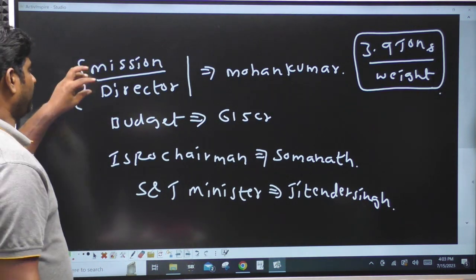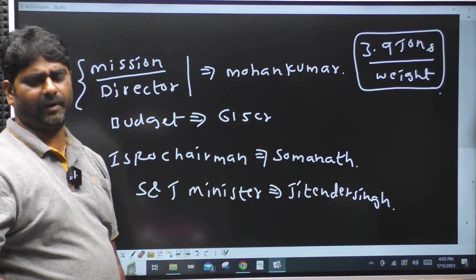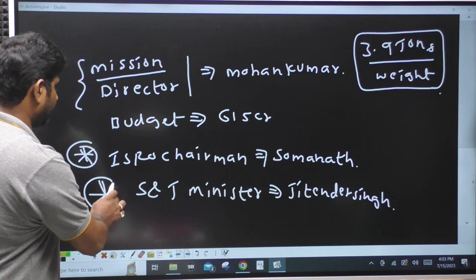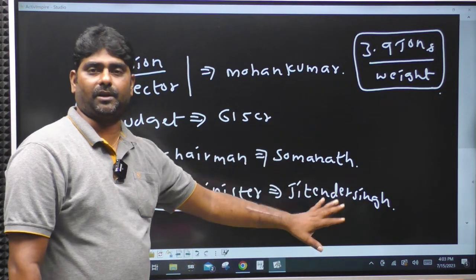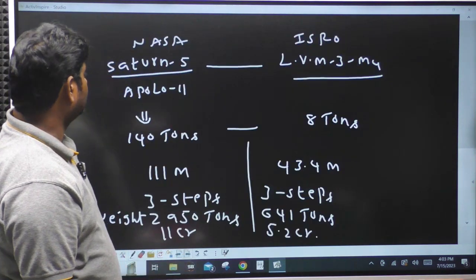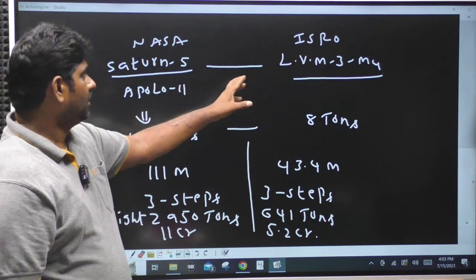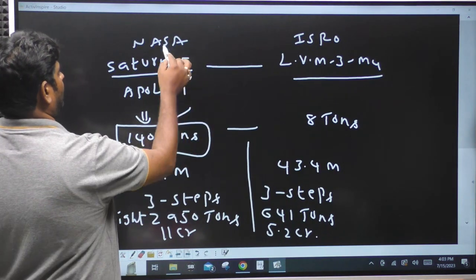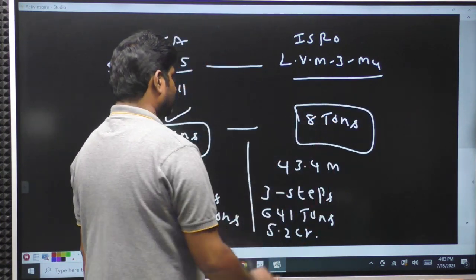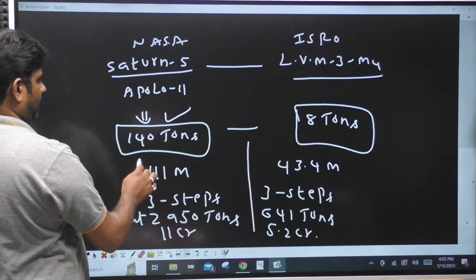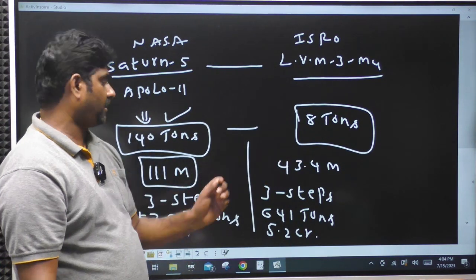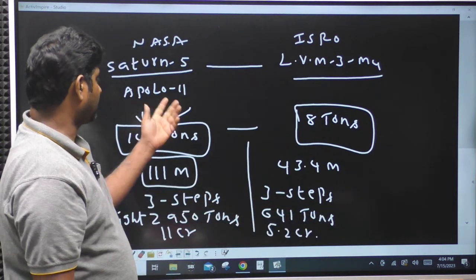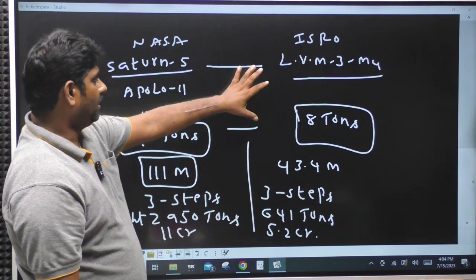The mission director is Mohan Kumar. The mission weight is 3.9 tons and the budget is 615 crores. ISRO chairman is Somanath, and the Science and Technology Minister is Jitendra Singh. India's LVM3-M4 is compared to America's Saturn 5 for Apollo 11. The LVM3-M4 is 43.4 meters tall and has 3 stages, weighing 641 tons — cheap and best.